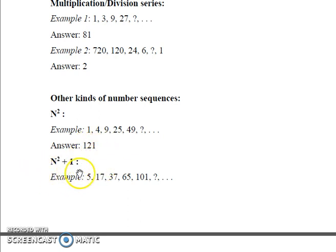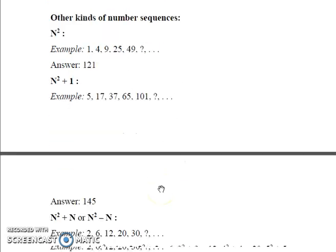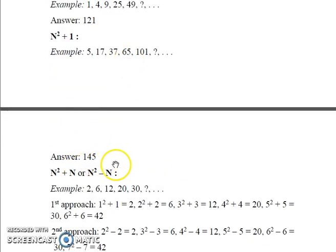In the next example, we have a somewhat similar series: 5, 17, 37, 65, 101. What we have done here is that we have taken every even number and squared them and then added 1. So 2 square plus 1 is equal to 5, 4 square plus 1 is equal to 17, 6 square plus 1 gives 37, 8 square plus 1 gives 65, 10 square plus 1 gives 101 and so on. Therefore, the next term in the sequence will be 12 square plus 1 which is equal to 145.